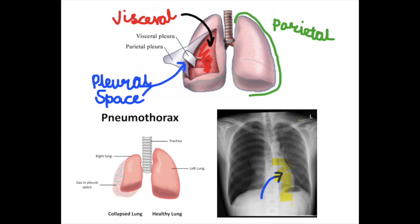The visceral layer of the lung is actually hugging the lung — you can't take it apart from the lung. It's hugging it very, very tightly. And then we have the parietal pleura, which is going to be on the outer layer. Between that parietal layer and the visceral layer, we have that pleural space. And pneumothorax is just accumulation of air into the pleural space.